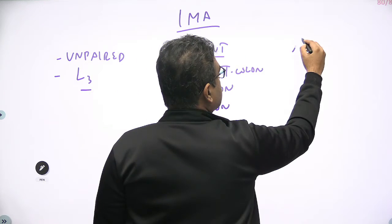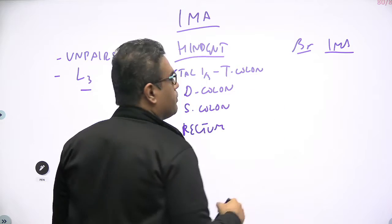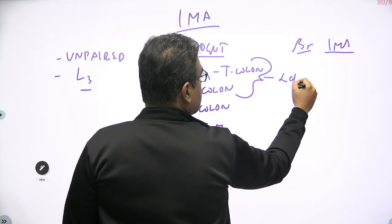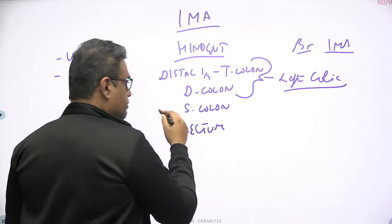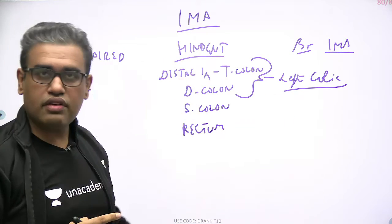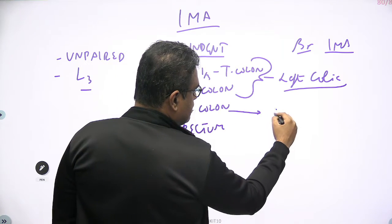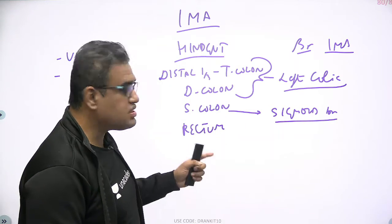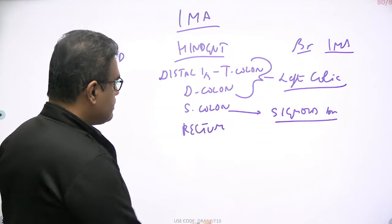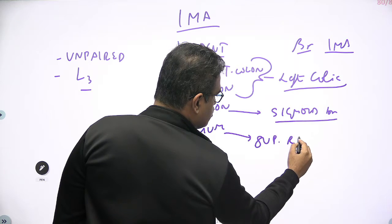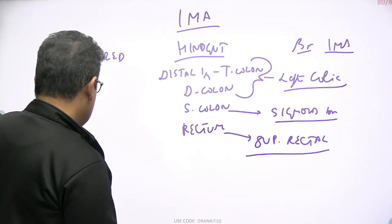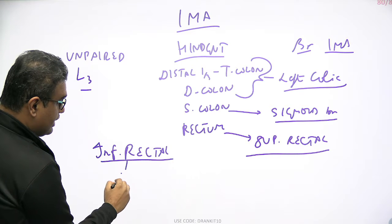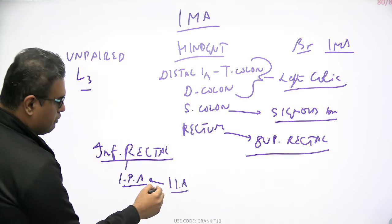Comparing these with the branches of the IMA that supply them: the distal one-third of the transverse colon and the descending colon are taken up by the left colic artery — because the ascending colon was supplied by the right colic, so common sense says the descending should be supplied by the left colic artery. The sigmoid colon, the largest structure at around 35 to 40 cm, is separately supplied by sigmoid vessels or sigmoid branches. Then the rectum and upper part of the anal canal are supplied by the superior rectal artery. There is also an inferior rectal artery, but that comes from the internal pudendal artery, which is a branch of the internal iliac artery — mainly its anterior division.